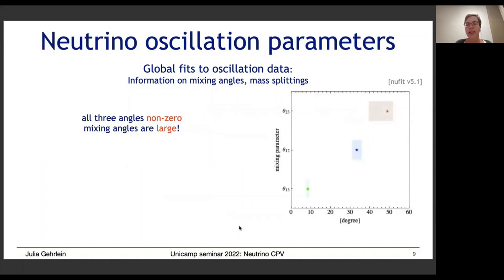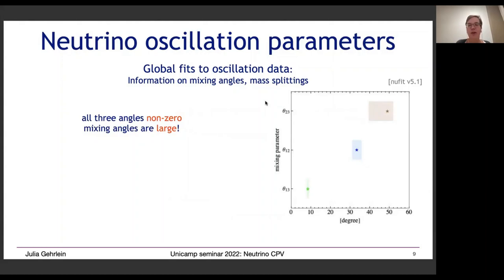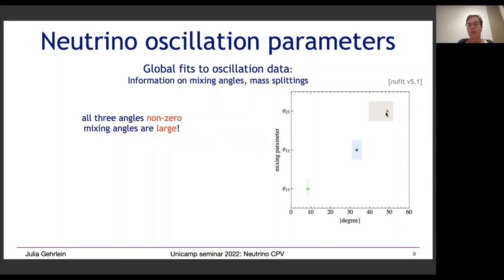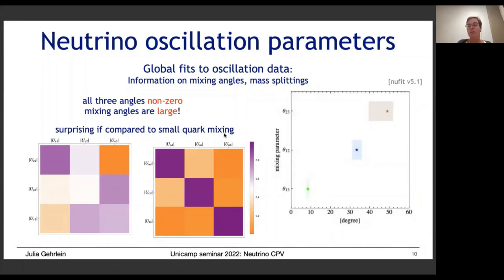We also have very good knowledge about the three mixing angles in the neutrino sector; all three are non-zero and in fact large. Theta_13 is around 8.5 degrees, theta_12 around 33 degrees, and theta_23 around 45 degrees with a relatively large uncertainty. We could even have a maximal mixing angle theta_23 of exactly 45 degrees. This is particularly surprising compared to the small mixing observed in the quark sector.